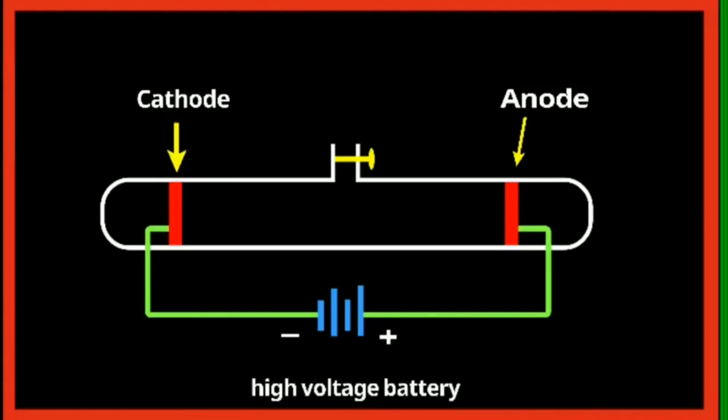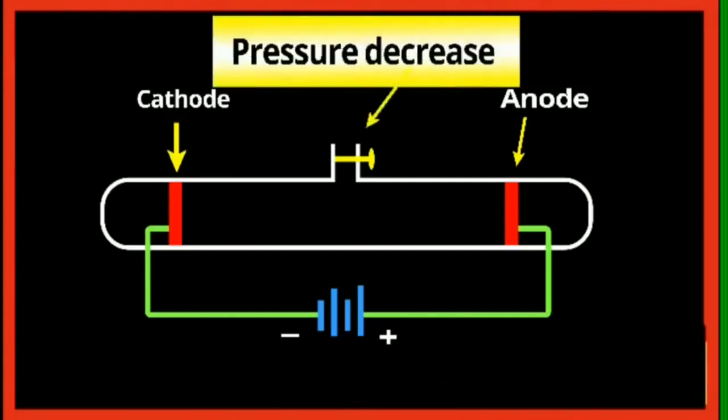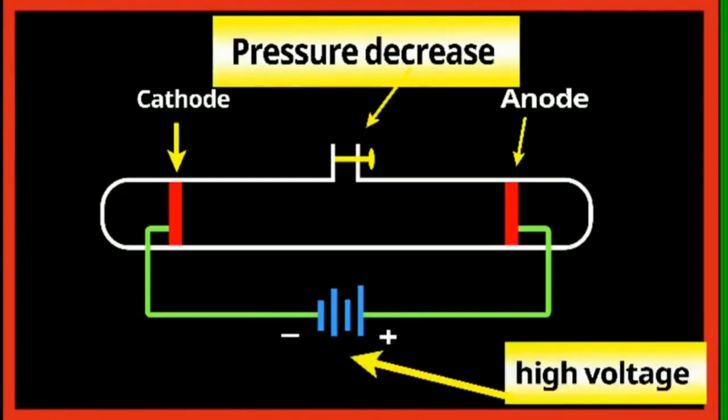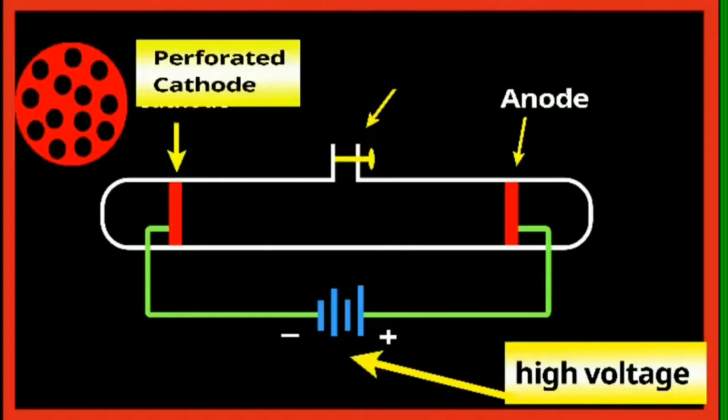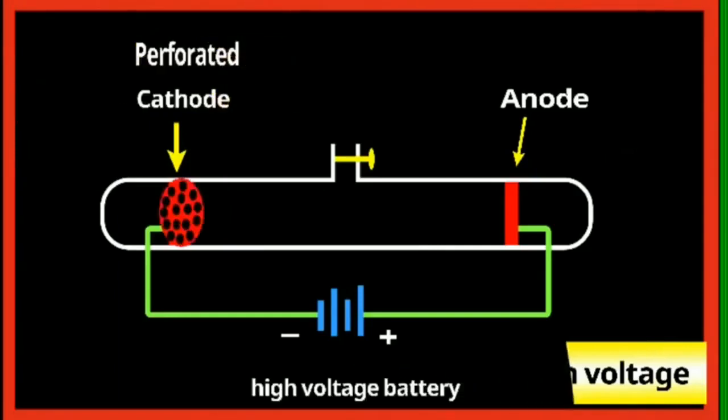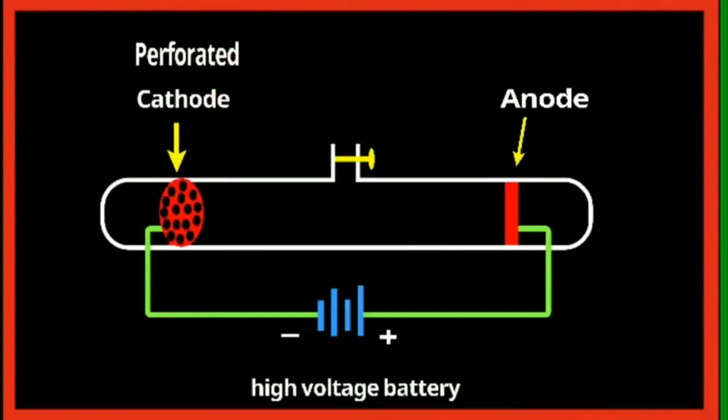When low pressure and high voltage is given, it was observed that luminous rays in the region behind the cathode were seen. These rays were called canal rays or positive rays as they contained positively charged particles called protons. You can see in the diagram, the perforated cathode is taken and high voltage and low pressure to the tube is applied. And the luminous region can be seen in the diagram behind the cathode, which is called canal rays or positive rays.